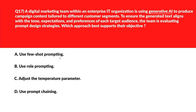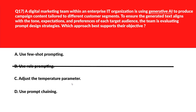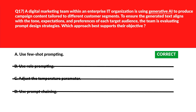Now we'll look at option A. A says use few-shot prompting. Using few-shot prompting for example-based guidance helps the model align tone and style with audience needs — let's keep this. We'll move to B. B says use role prompting. Using role prompting limits persona shaping and influences delivery but lacks audience-specific calibration — so option B is out. Option C says adjust the temperature parameter. Adjusting the temperature parameter for output variability affects style but doesn't ensure audience relevance — we'll eliminate it. Option D says use prompt chaining. Using prompt chaining supports flow but doesn't target content generation — we'll reject it. Lock option A, use few-shot prompting, as the right answer.